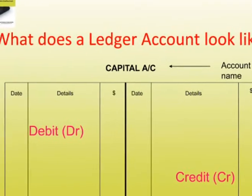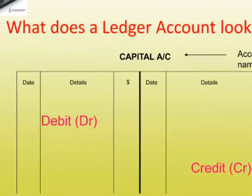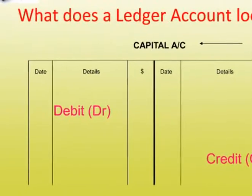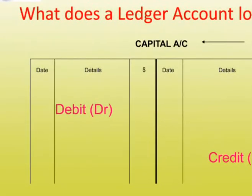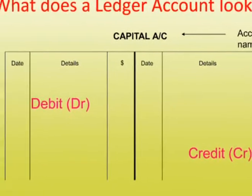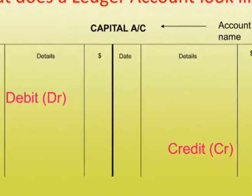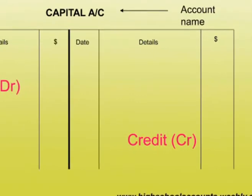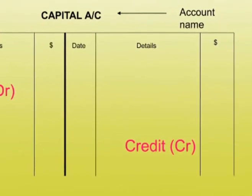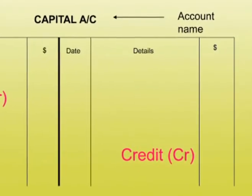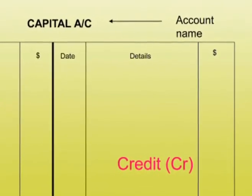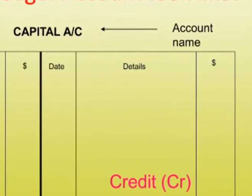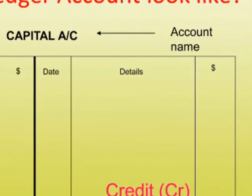The left side of an account is called the debit side, abbreviated DR. The right side of the account is the credit side, abbreviated CR. Each side of the account has a date column, a details column, and a money column.